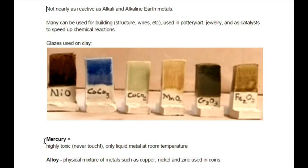Long ago, before scientists knew a lot, people would use mercury in different professions and would literally go crazy. An example of this is the mad hatter from Alice in Wonderland. In real life, people who made hats out of felt were exposed to trace amounts of mercury every day, and eventually it built up in their system, causing different neurological disorders and diseases — yes, they would go crazy and die. So again, if you ever see any mercury, don't touch it. It's very, very toxic.